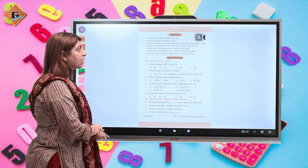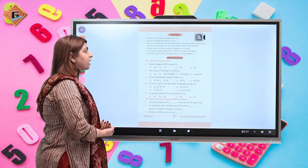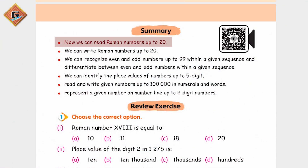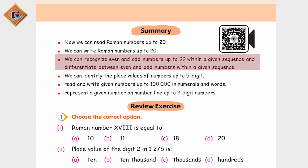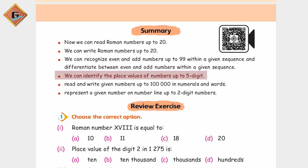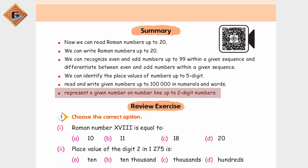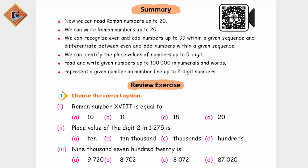Is chapter mein sabse pehle humne dekha tha ki hum Roman numbers 20 tak kis tarah likh sakte hain aur unko kaise read kar sakte hain. Humne odd numbers ko 99 tak dekha, unke sequence ko recognize kiya aur differentiate kiya between even numbers and odd numbers. Iske ilawa humne place value dekhi five digits tak, aur two digits ko number line ke upar represent karna bhi sikha.